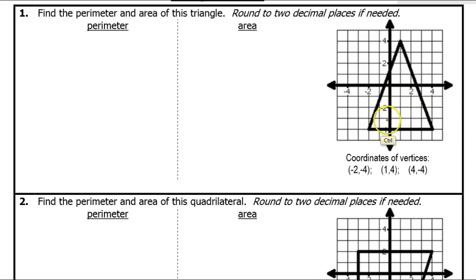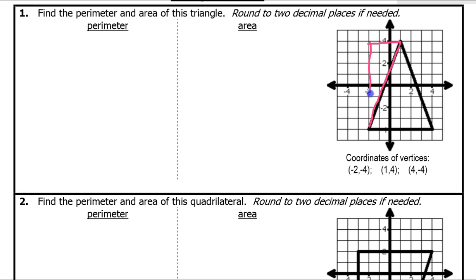Let's start by finding the length of this side right here. I like to use the Pythagorean theorem for this. I will turn this into a right triangle where the hypotenuse is the side that I'm looking for.